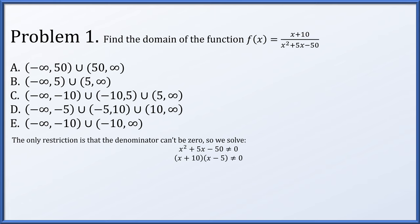This factors as x plus 10 times x minus 5. If this product is not zero, then neither factor can be zero. In other words, x cannot be negative 10, and it cannot be 5. As intervals, that is option C: all real numbers, specifically excluding negative 10 and 5.